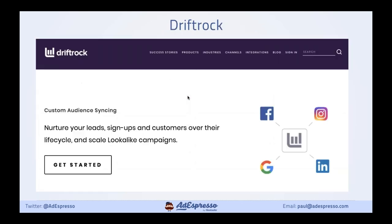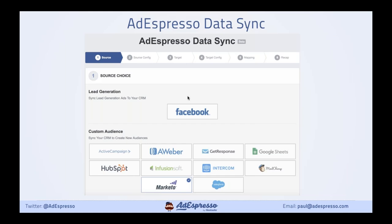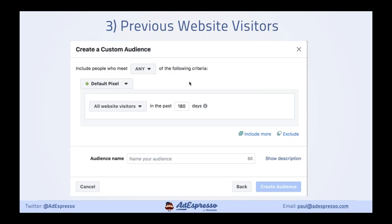LeadsBridge has got 380 CRMs and is around $30 a month. Driftrock is quite well known and more enterprise level. In AdEspresso we've got about 11 CRMs — all the big ones like HubSpot, MailChimp, Infusionsoft — and we can link up to Google Sheets. If you've got an AdEspresso account, this is included for free. Go into the Tools tab and look for Data Sync.